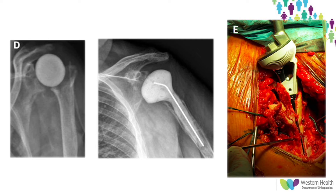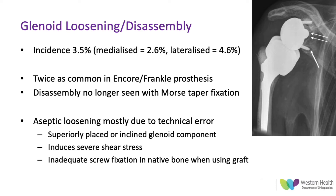Moving on to glenoid loosening and disassembly — the incidence is approximately 3.5%, and it's almost twice as common with the Encore or Frankel prosthesis. Disassembly of the glenoid side is now rarely seen with Morse taper fixation of the glenosphere on the base plate. Aseptic loosening of the glenoid side is mostly due to technical error — placing the base plate too superiorly or inclining it too superiorly increases shear forces at the prosthesis-bone interface. Using bone graft on the glenoid side without a long enough central peg or screws that only purchase graft rather than native bone also increases the risk.